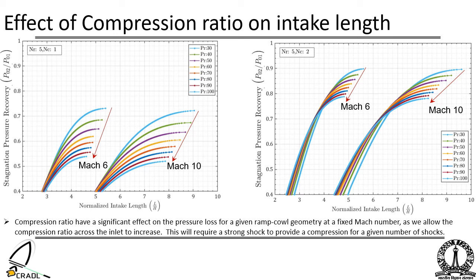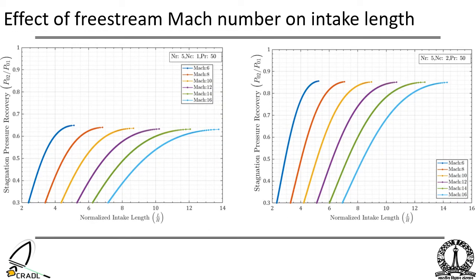Freestream Mach number also plays an important role in determining the pressure recovery and the intake length. At higher Mach number, for a given compression ratio and given number of ramps and cowls, the length of the intake increases with increase in Mach number. This is due to the fact that for a given deflection angle, the pressure rise increases with freestream Mach number. This results in a steeper geometry for a given height of the capture area.